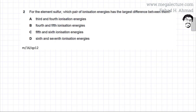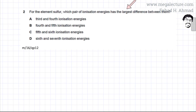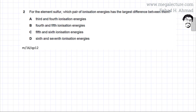The question asks: for the element sulfur, which pair of ionization energies has the largest difference between them? We are talking about the sulfur atom, so I am going to first draw what a sulfur atom looks like.